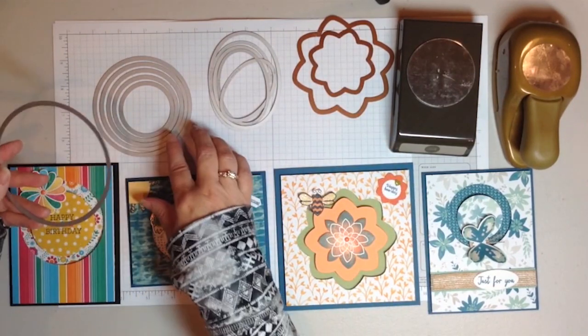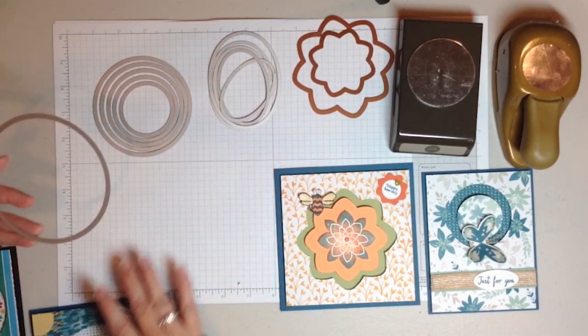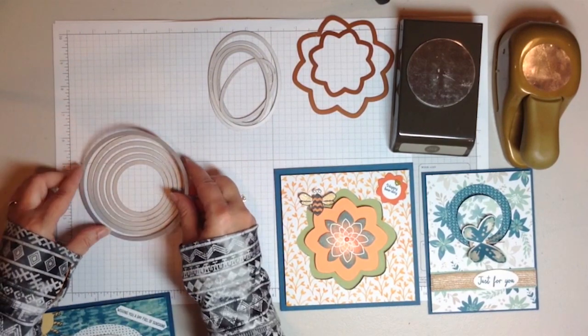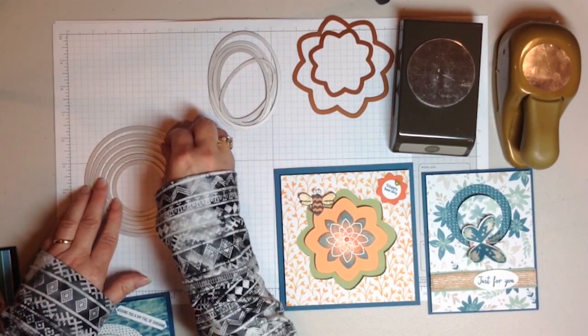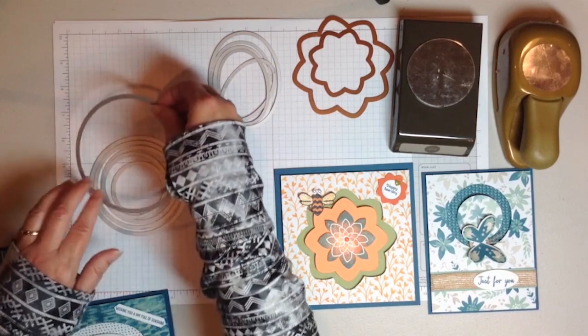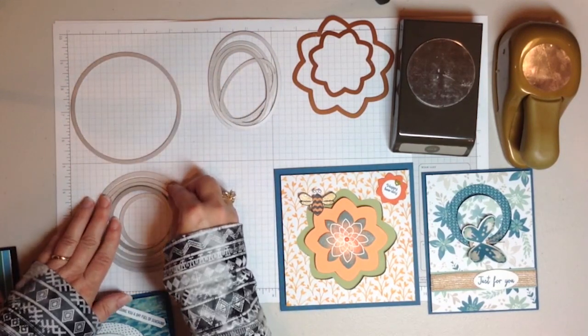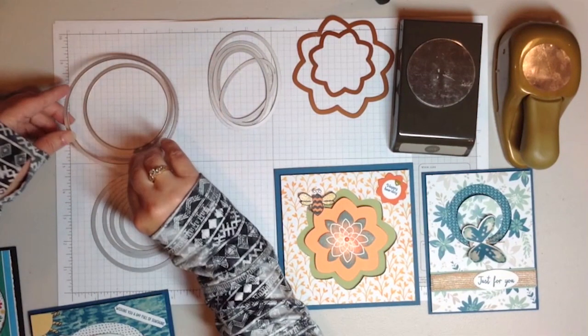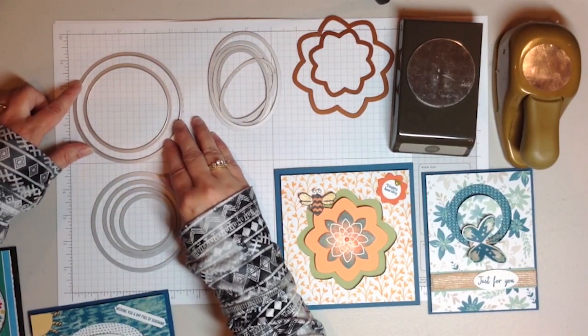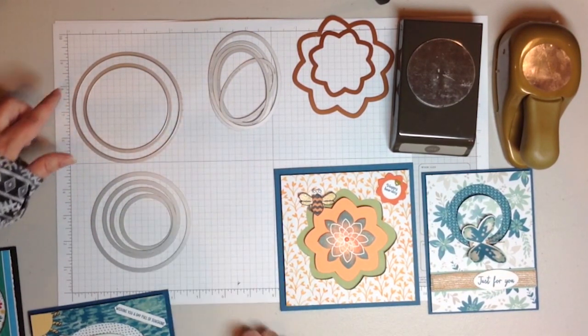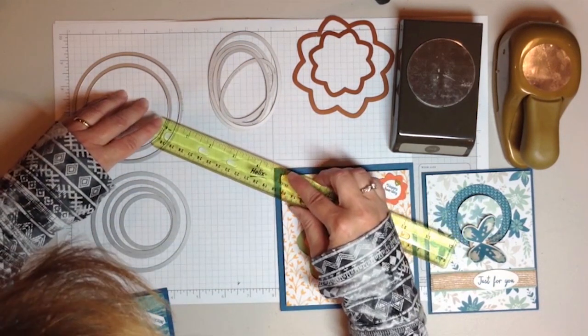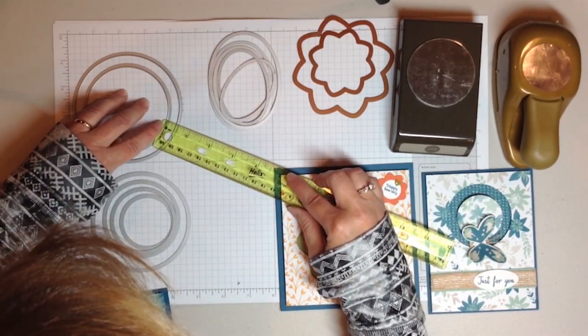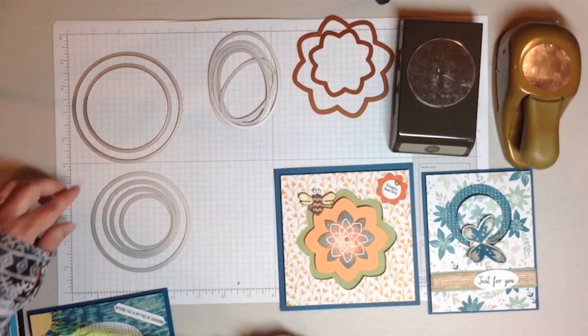I found that for this set here of circle nesting dies, it worked if I used one and then skipped one. When I measure those, I just lay those out concentrically and go from cutting edge to cutting edge. That is at least three eighths of an inch. So that would work.